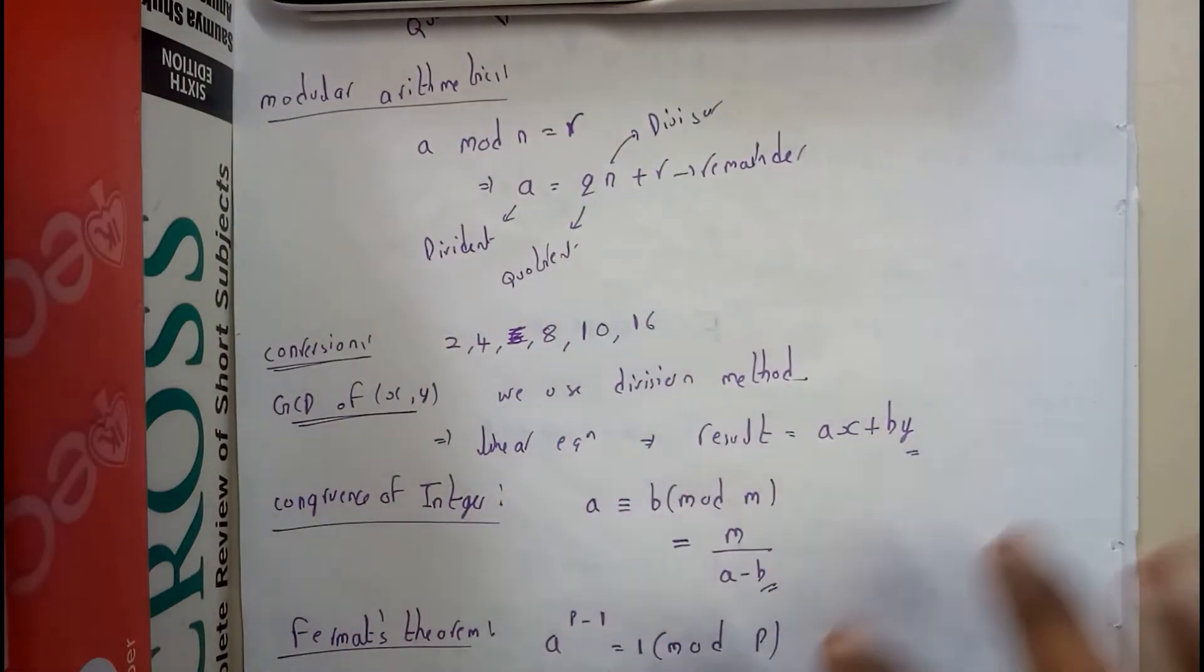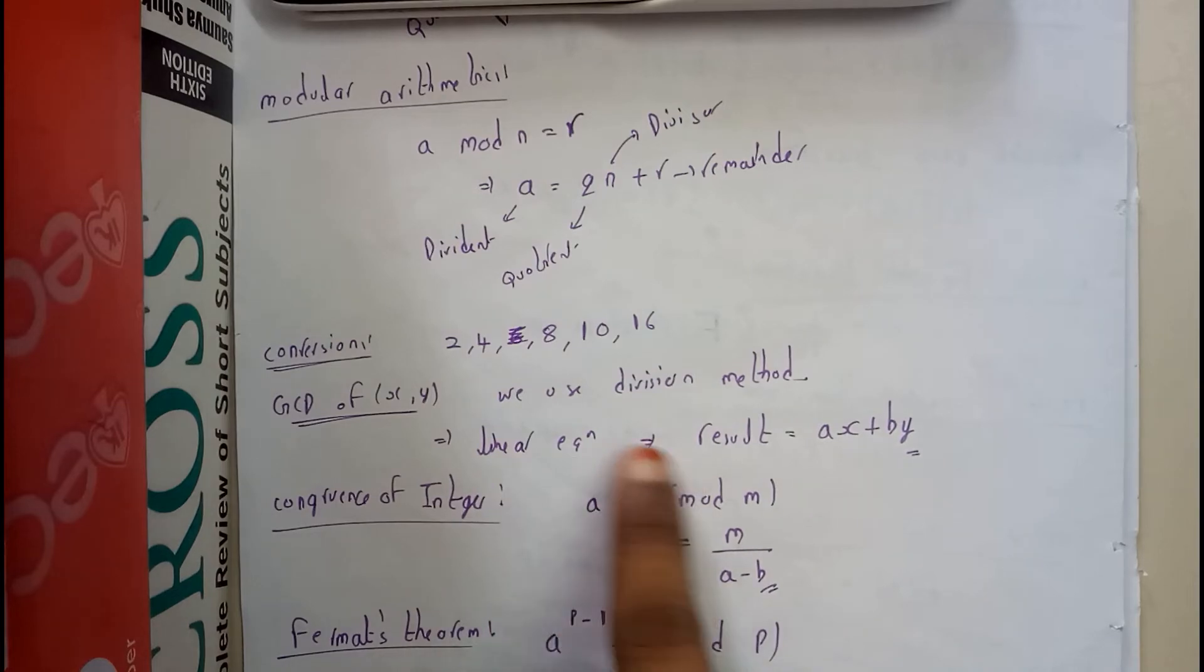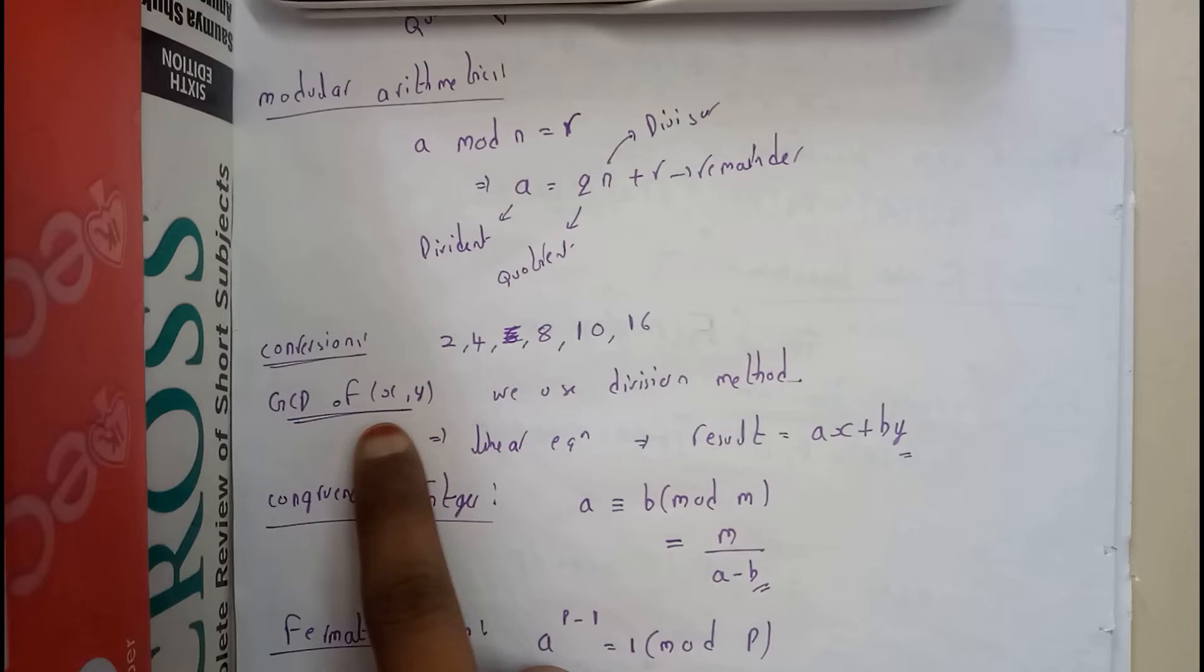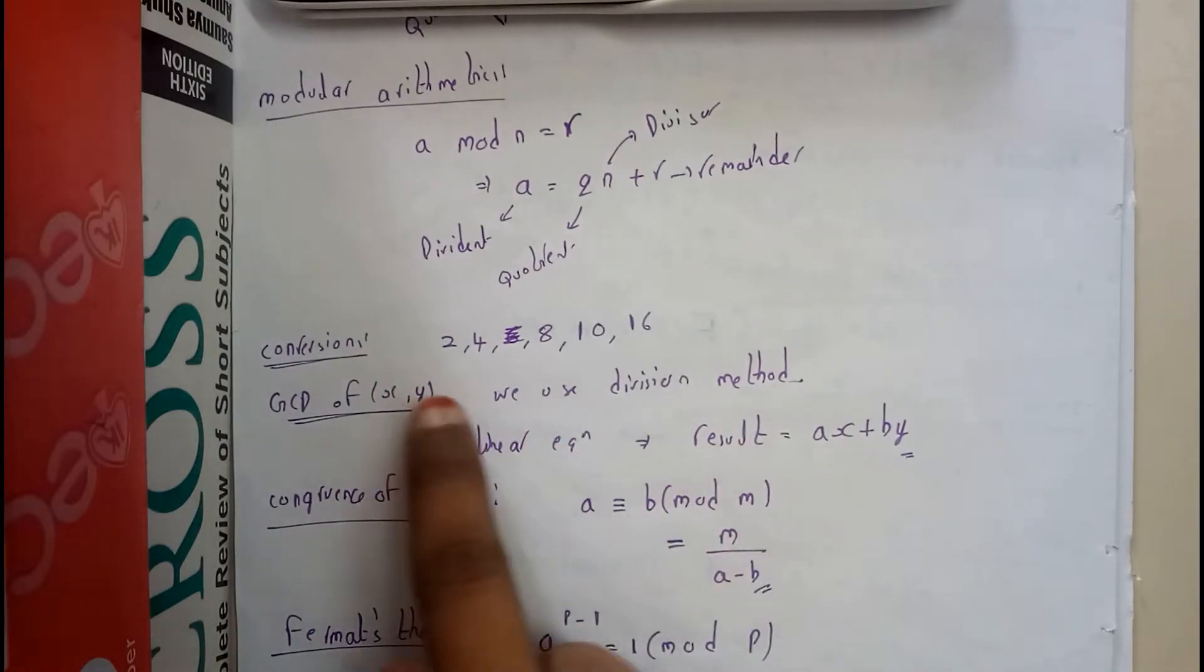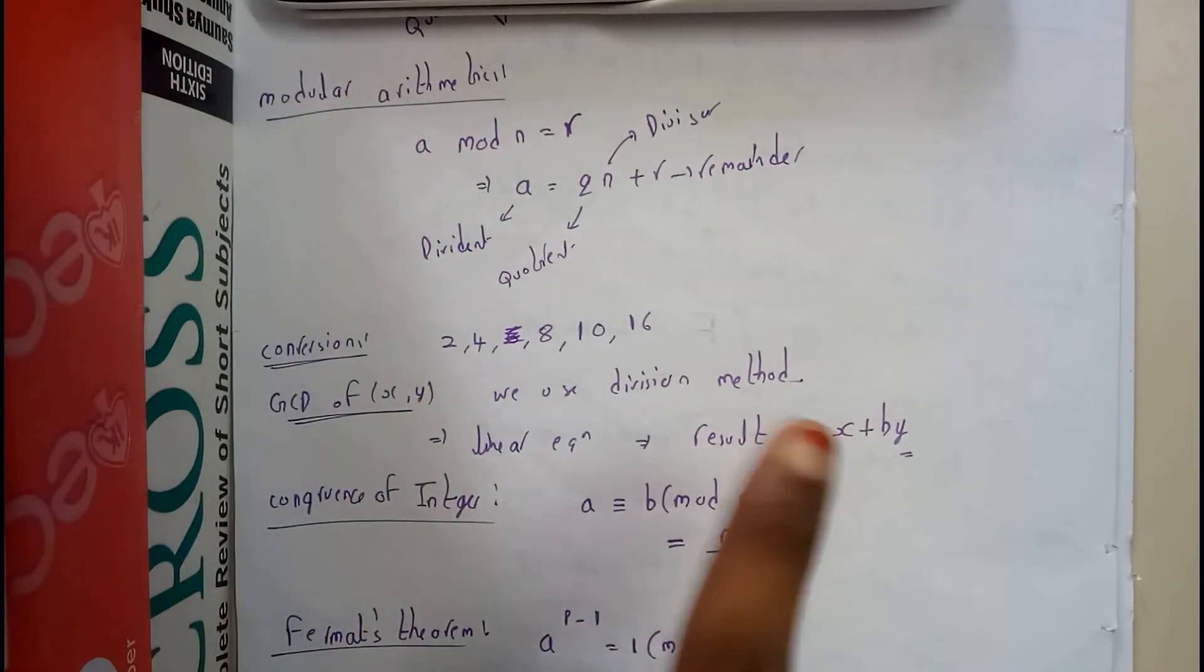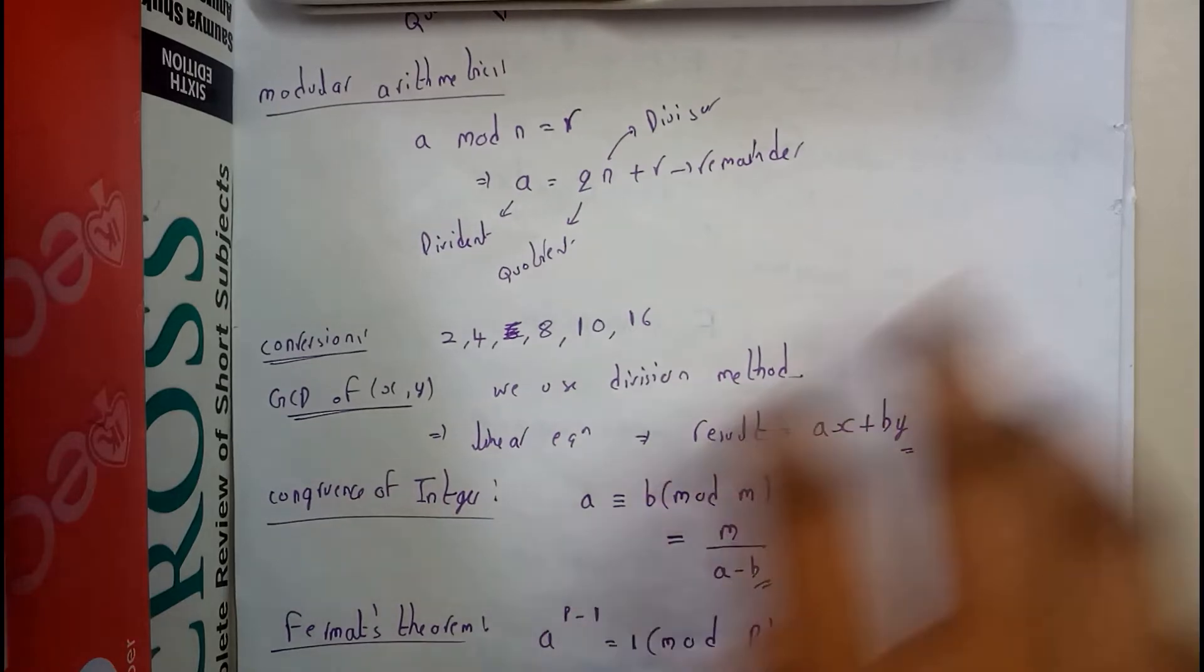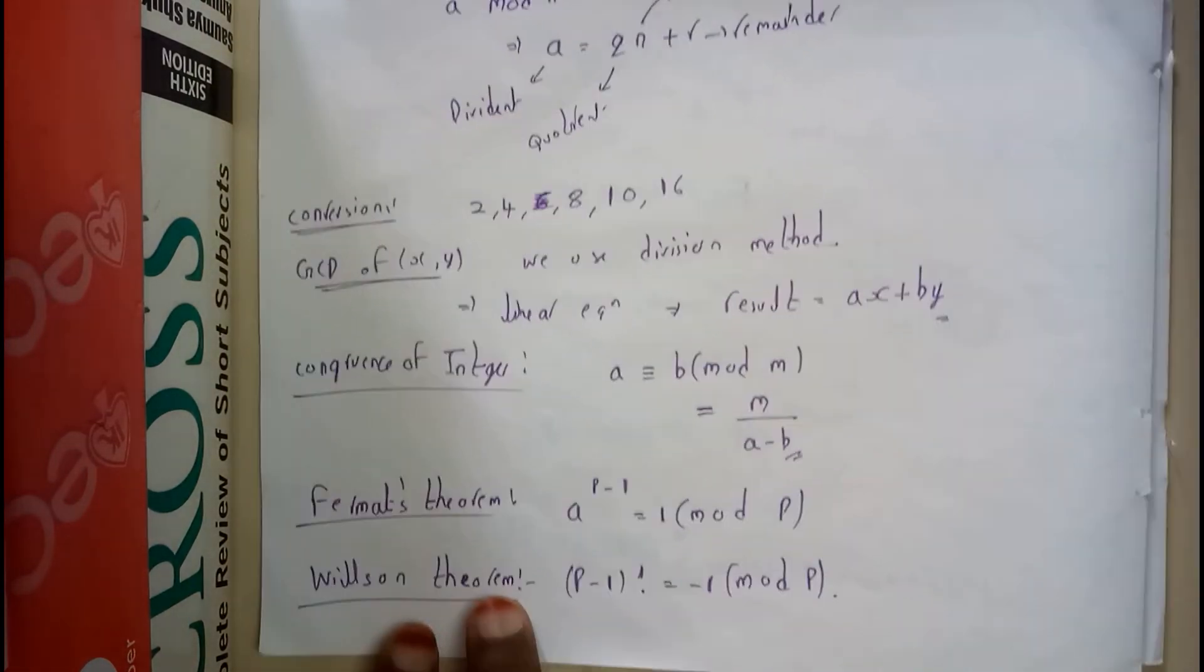For GCD, we used the division method, and at the end we wrote the linear equation: the final GCD = xa + by. In that format, we found the result. If you remember, I think I did it, so you should remember it.